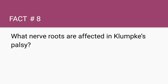What nerve roots are affected in Klumpke's palsy? C8 and T1. Someone can develop Klumpke's palsy due to grabbing a tree when falling or during newborn delivery. The nerves affected are the median and ulnar nerves. So in Klumpke's palsy, C8 and T1 nerve roots are affected, and the median and ulnar nerves are subsequently affected, meaning movements of the lumbricals will also be affected.